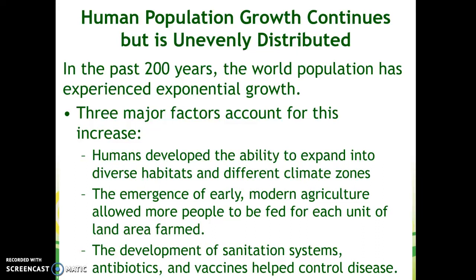In the past 200 years, the world population has experienced major exponential growth, and there are three major factors that account for this increase. First, humans have developed the ability to expand into diverse habitats and different climate zones. Our technology has advanced — first through our clothing, and then up to today with our climate control systems, turning on the heat or air conditioning to keep us at an optimum temperature even when it's really cold or really hot.